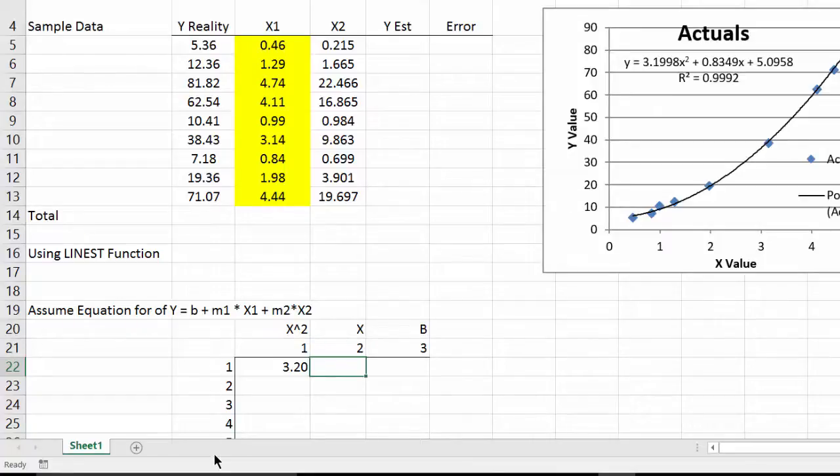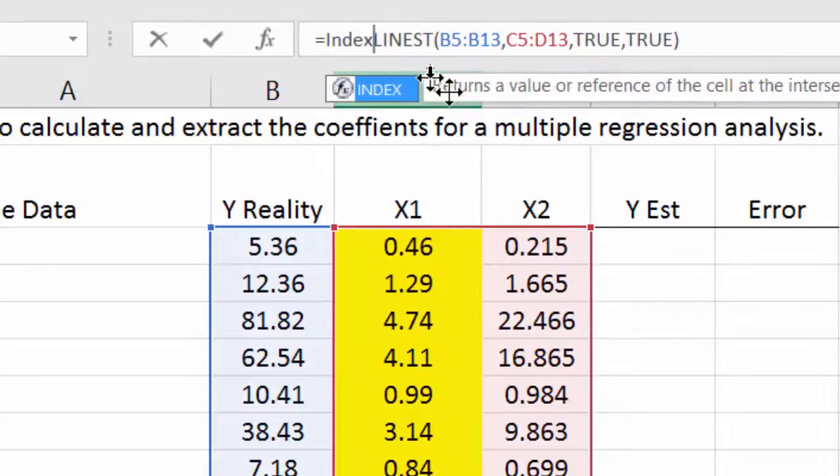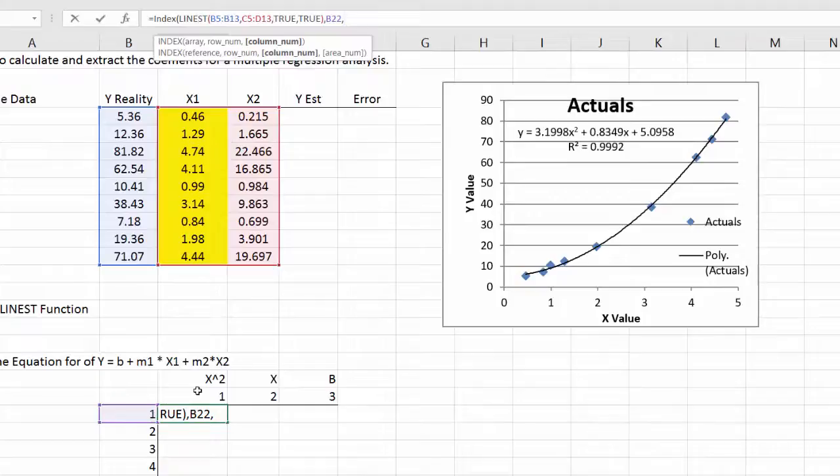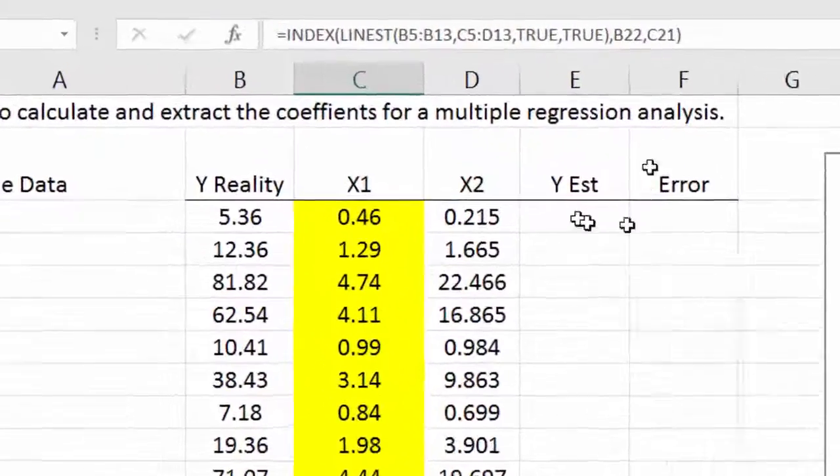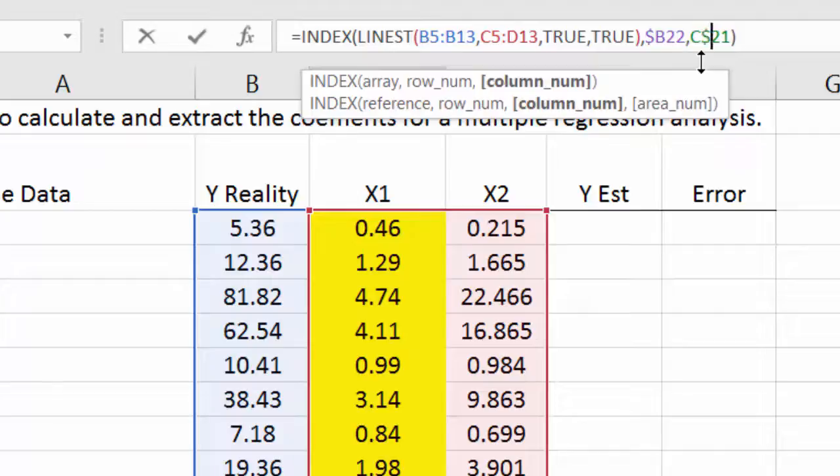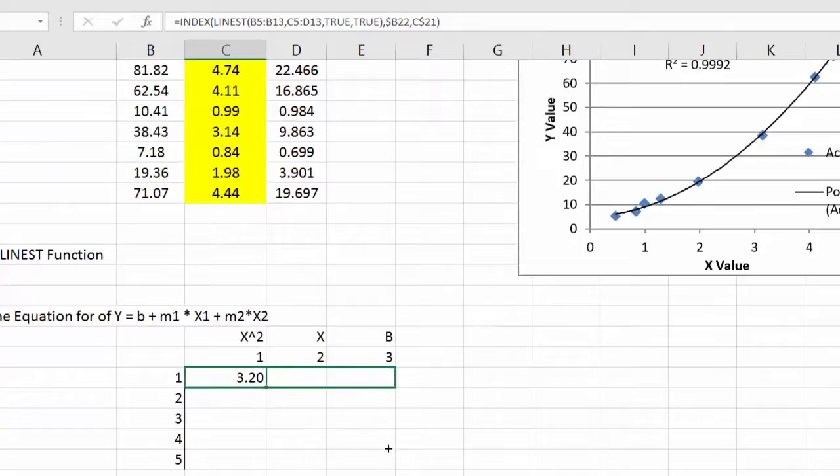with numbers one to n going down on the side and one to n going out to the right. What I'm going to do is I'm going to close this LINEST function with an INDEX function. So LINEST of this variable and then I want the row and the column. And to be able to copy it across I'm going to put a dollar sign in front of the B and a dollar sign in front of the C. And now when I copy this down